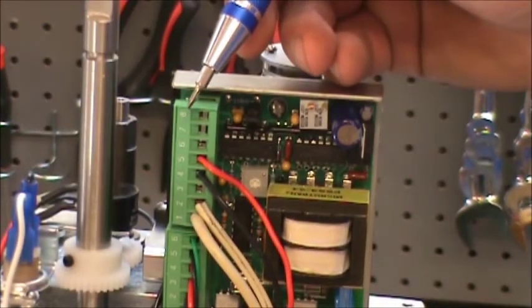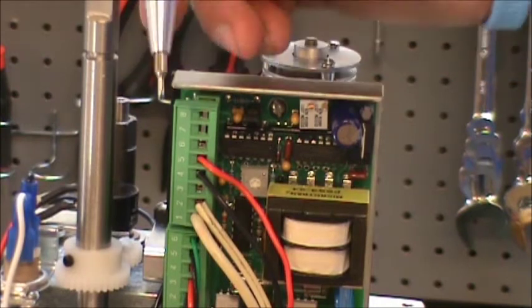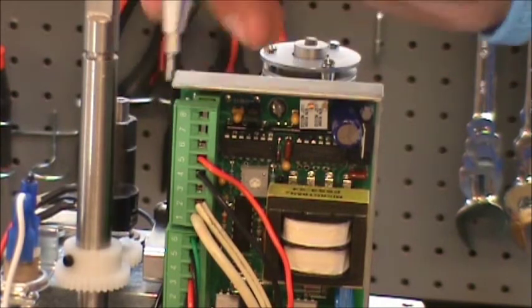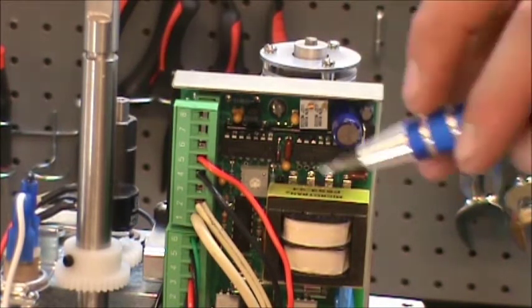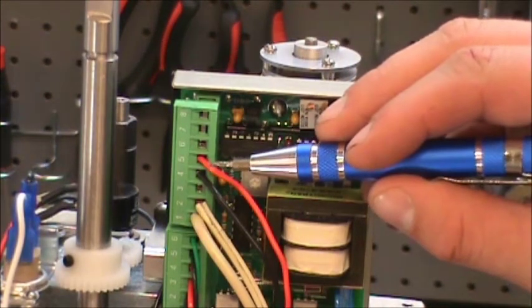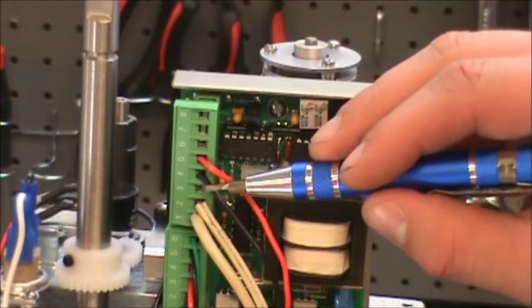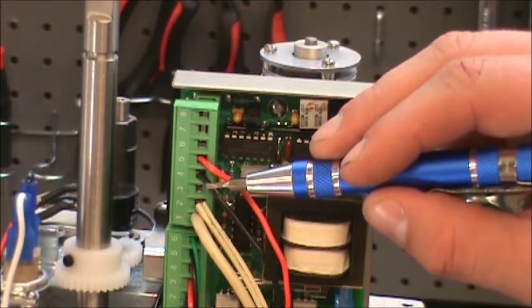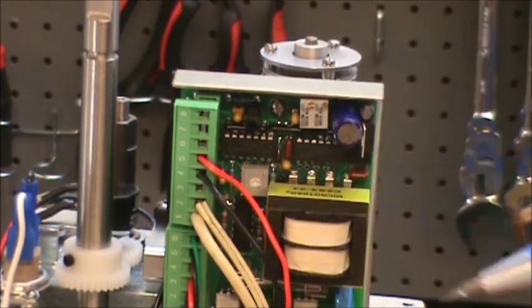For step two in the calibration of the 4 to 20 board, you're going to go ahead and connect your control signal. You're going to be putting the positive in 5, negative in 4. You're ready to move on to the next step.